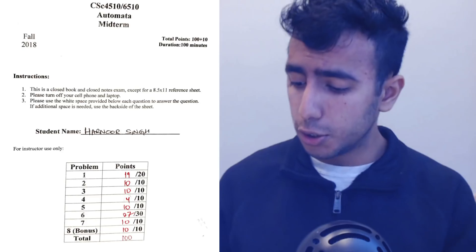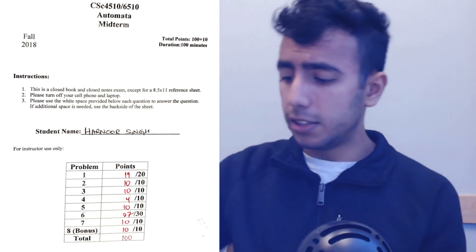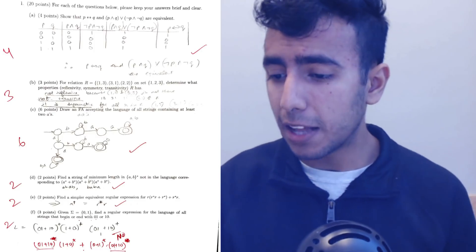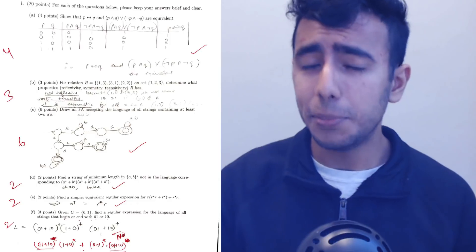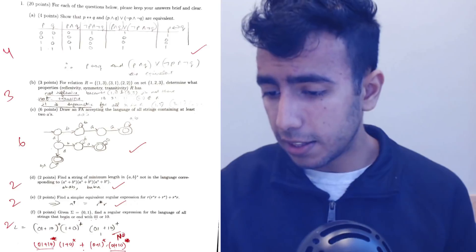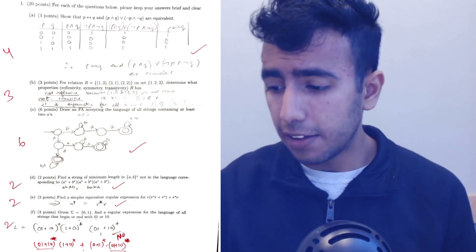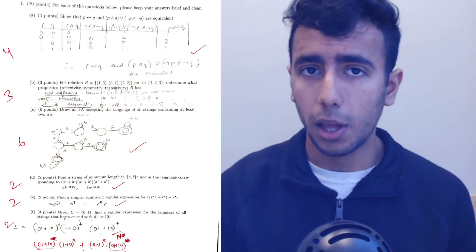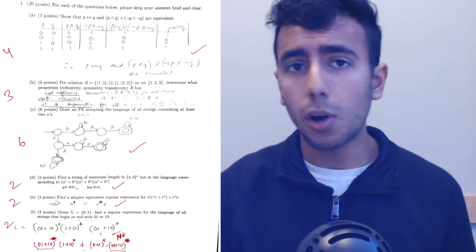Moving on to my next exam for the class named automata — this is my most difficult class that I have ever taken, and I got a hundred, but that was a hundred out of a hundred and ten because we had bonus points. Starting with the first problem, these were practical truth table problems — a math concept that I learned in CBSE board in grade 12 relating to relations and functions. The next problem was building an FA, that's a finite automaton, which is something you will learn when you become a student here.